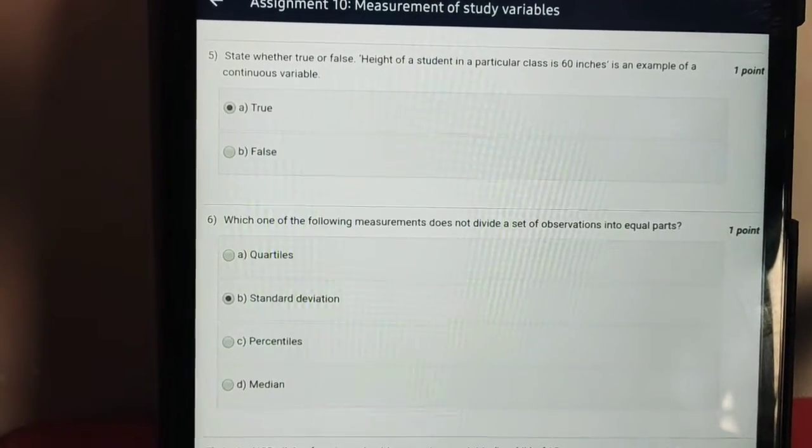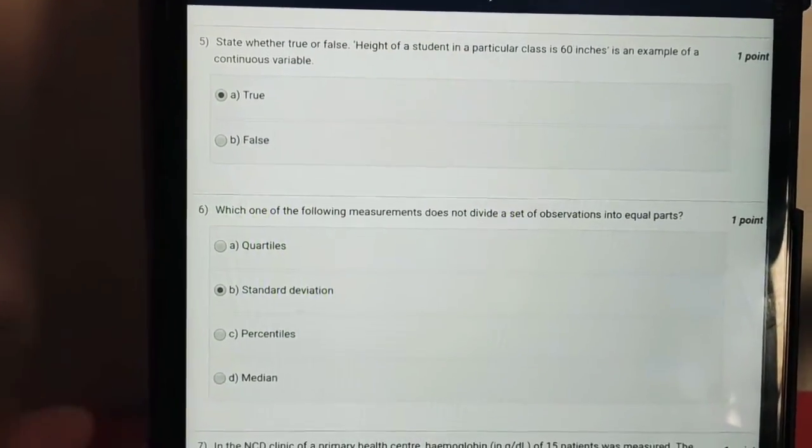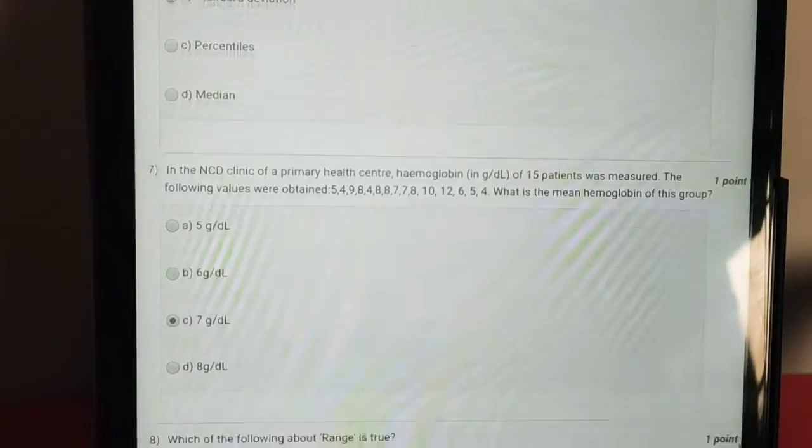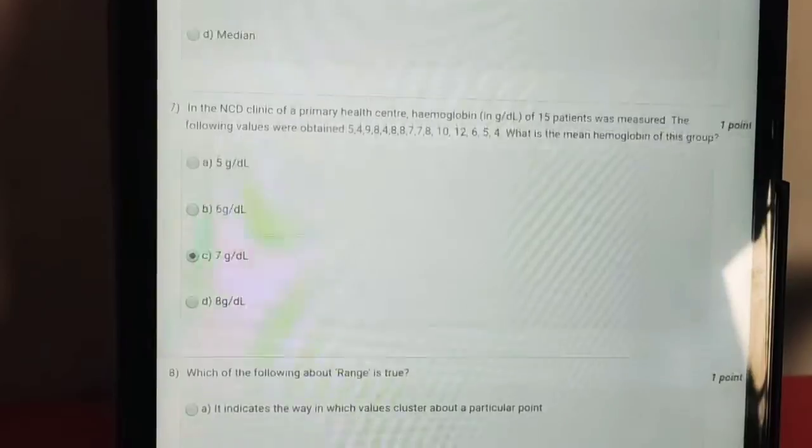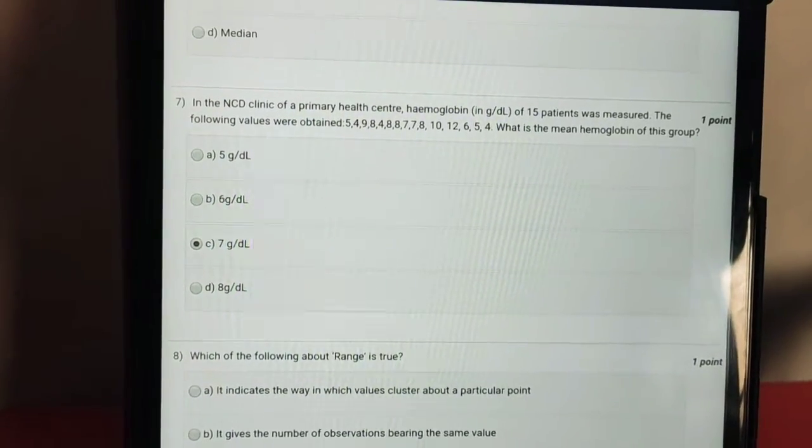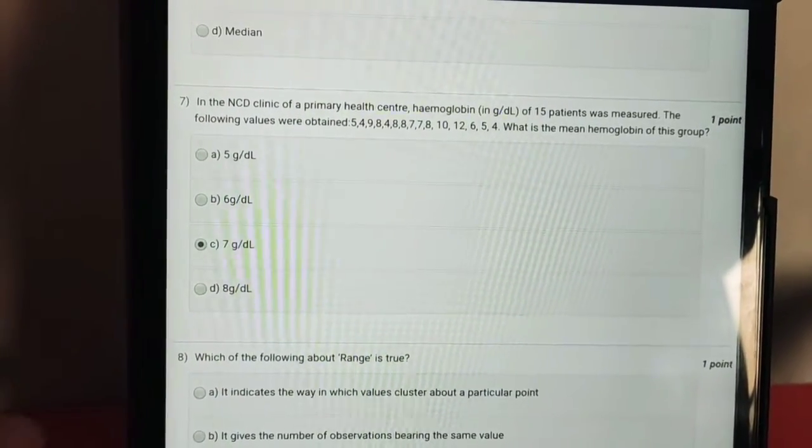Question 6, answer is option B, standard deviation. Question 7, the answer is option C, 7 grams per deciliter.